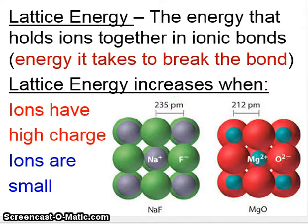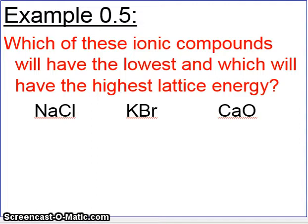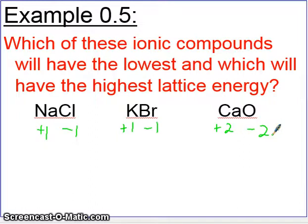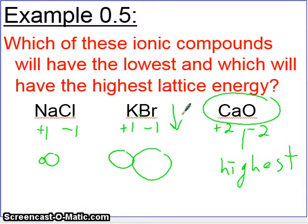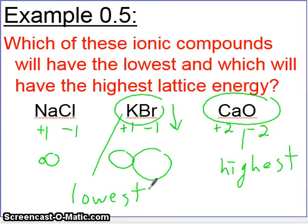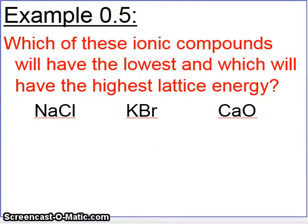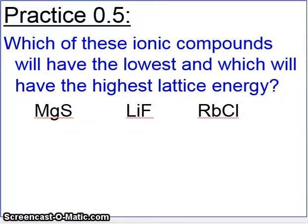Here's a quick example: which ionic compound has the lowest and which has the highest lattice energy? Sodium chloride has plus one and minus one charges, so it will be lower. KBr is also plus one and minus one, but bromine and potassium are bigger atoms — lower on the periodic table — so KBr has the lowest lattice energy. Calcium oxide is plus two and minus two, so it has the strongest lattice energy and is the highest. This completes Lesson 2 of Chapter 6.